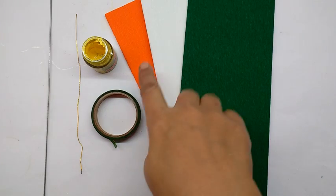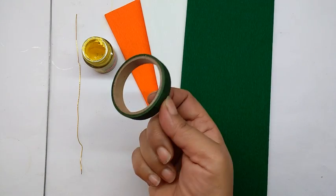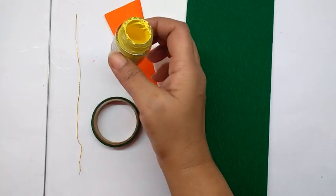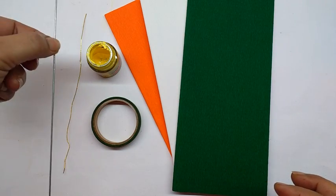Materials required are crepe papers in orange, white, and green, a green floral tape, yellow acrylic color, a thin wire, and a thick wire.